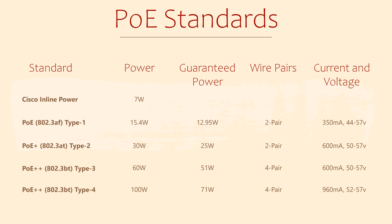Each of these standards is a power class. Powered devices can change their power class over time if needed. For example, a device may need only Type 1 to power up. Later on it might need to turn on a screen, so it might signal a switch that it needs to change to Type 2, 3 or 4.